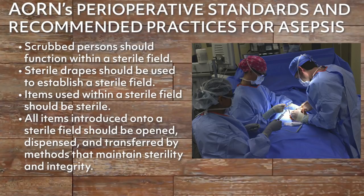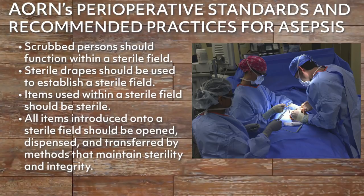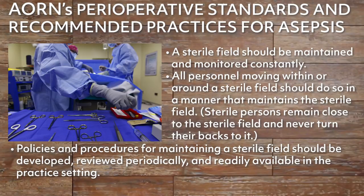Aseptic technique involves following practices that prevent contamination from pathogens and must be followed by all members of the OR team to reduce the risk of surgical site infections. The Association of Perioperative Registered Nurses, or AORN, has perioperative standards and recommended practices for asepsis, including: scrubbed persons should function within a sterile field; sterile drapes should be used to establish a sterile field; items used within a sterile field should be sterile; all items introduced onto a sterile field should be opened, dispensed, and transferred by methods that maintain sterility and integrity; a sterile field should be maintained and monitored constantly; all personnel moving within or around a sterile field should do so in a manner that maintains the sterile field; and sterile persons remain close to the sterile field and never turn their backs to it. Policies and procedures for maintaining a sterile field should be developed, reviewed periodically, and readily available in the practice setting.